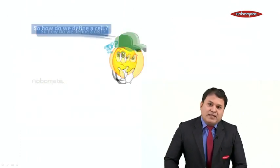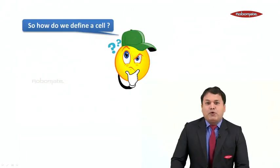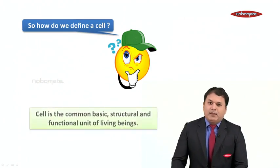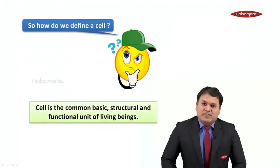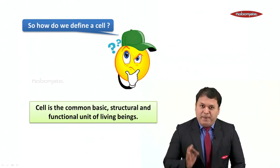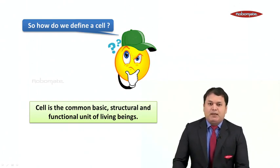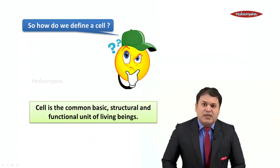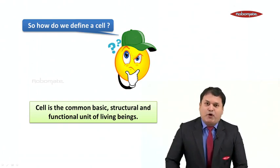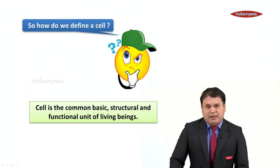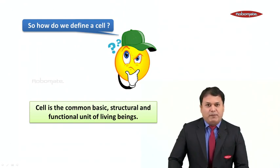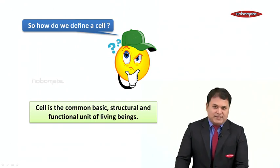Now let us go on to understand how we define a cell. A cell is the common, basic, structural and functional unit of living beings. The structure of living beings is made up of cells, and the functions of living beings also occur in their cells.